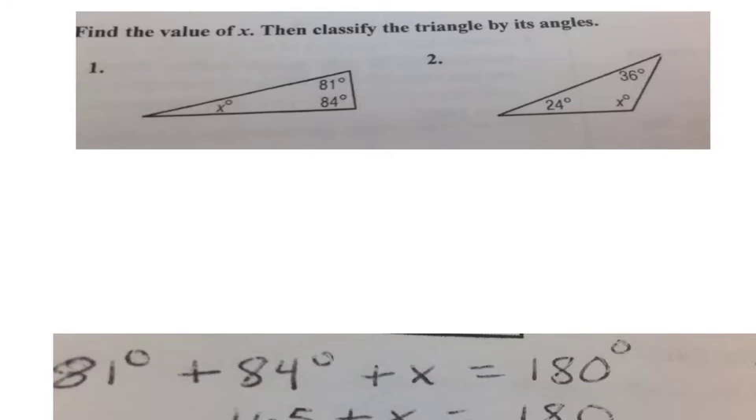First, I'll work on finding the value of x. We know that there are 81 degrees in this corner, or angle, and 84 in this angle. But what we don't know is how many are in this angle, right there. So, the way we're going to discover that is, first of all, we have to know that the three angles in a triangle always add up to 180 degrees.